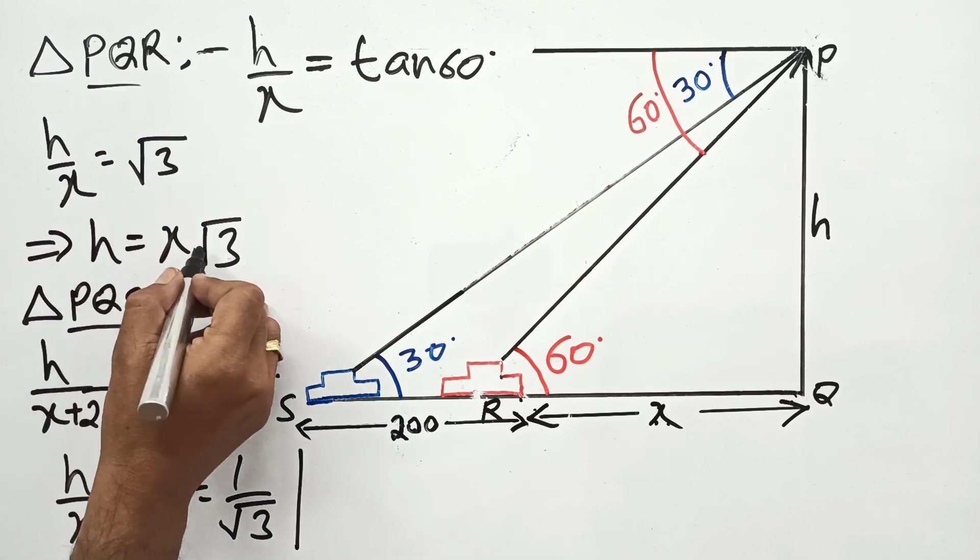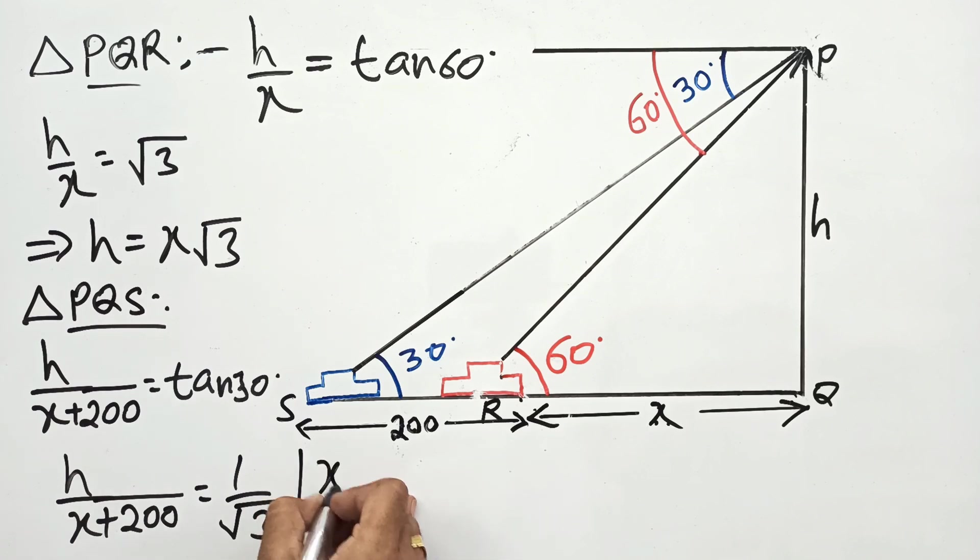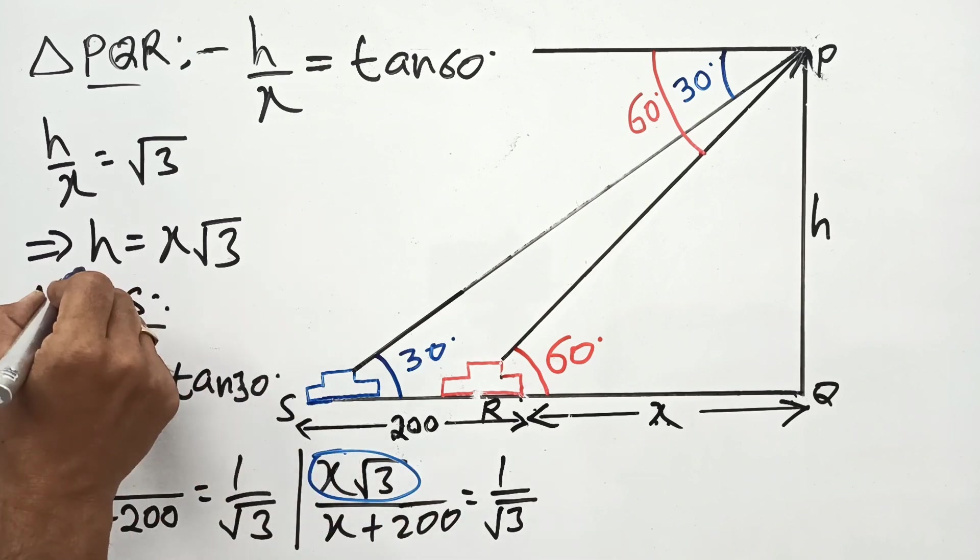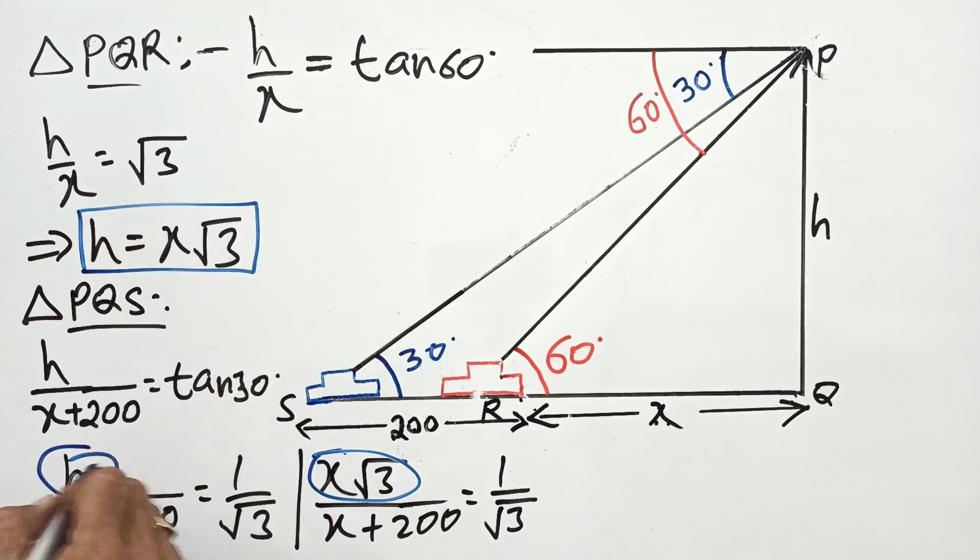Now in place of h, we can put x root 3. We replace this h by x root 3 because h is given as x root 3.